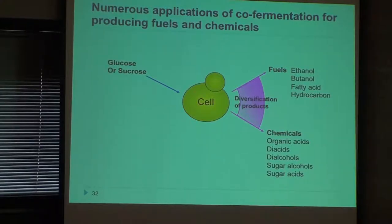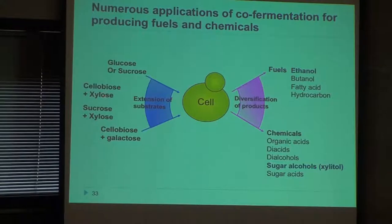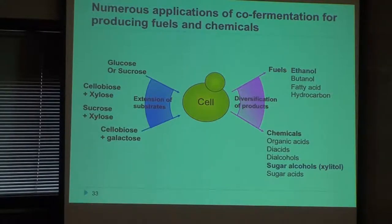So the basic idea is: conventionally we use glucose or sucrose to produce fuels and chemicals, but now we extend the substrate using cellulosic hydrolyzate and can use multiple sugars at the same time — cellobiose and xylose, sucrose and xylose, or cellobiose and galactose. By using cheaper or non-edible substrates, we can do even better because we have simultaneous co-fermentation of mixed sugars.